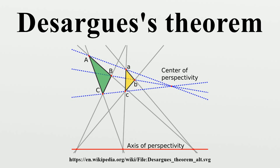There are also many non-Desarguesian planes where Desargues's theorem does not hold. Desargues's theorem is true for any projective space of dimension at least three, and more generally for any projective space that can be embedded in a space of dimension at least three. It can be stated as: if lines AA', BB', and CC' are concurrent, then the points AB∩A'B', AC∩A'C', and BC∩B'C' are collinear. The points A, B, A', and B' are coplanar because of the assumed concurrency of AA' and BB'.